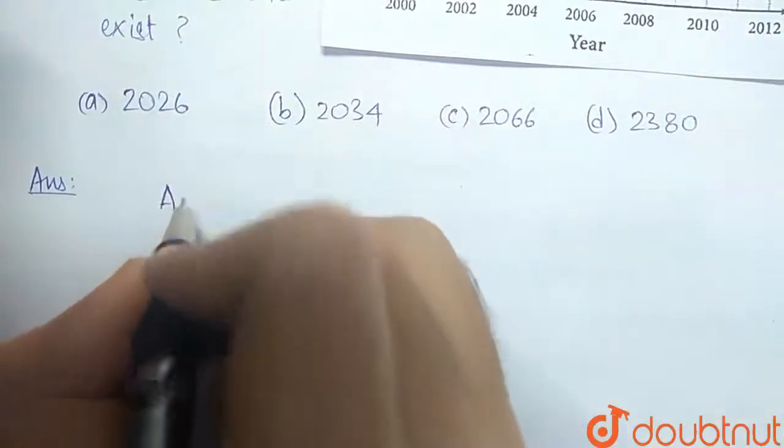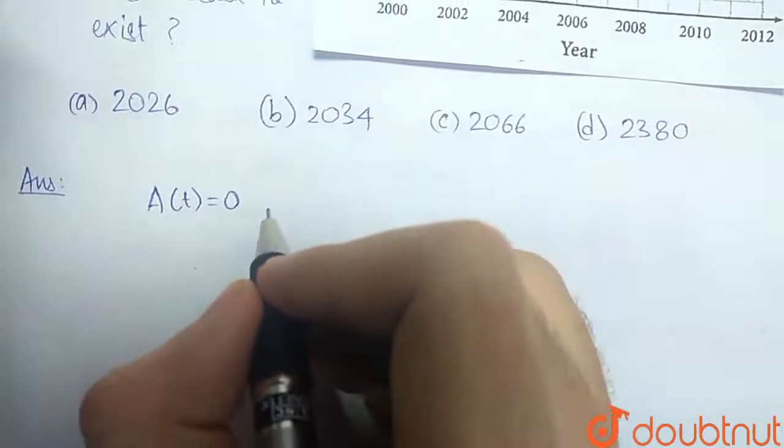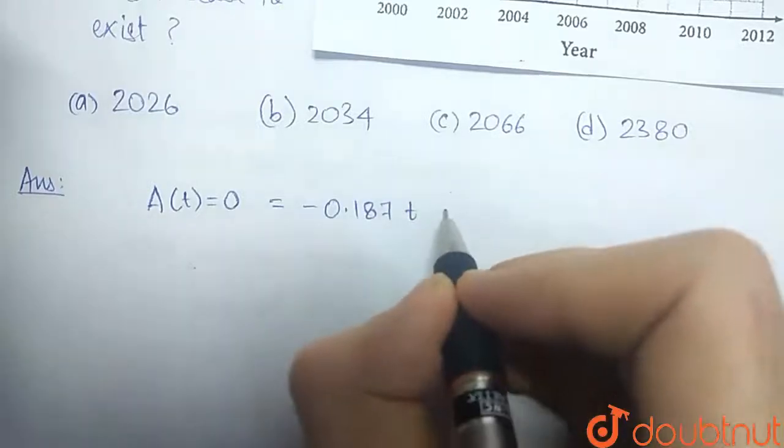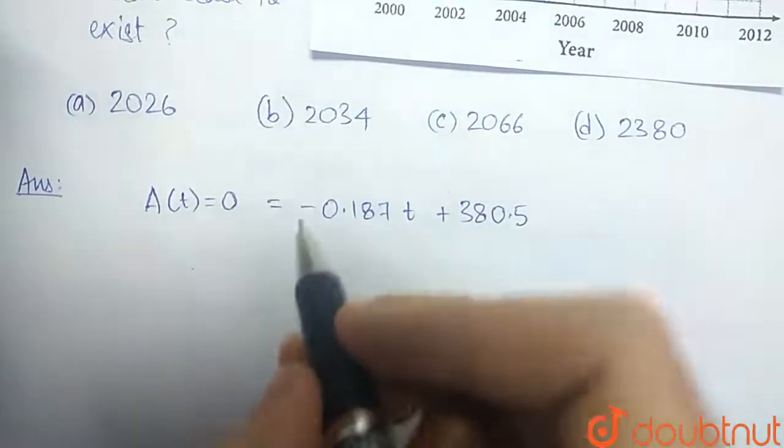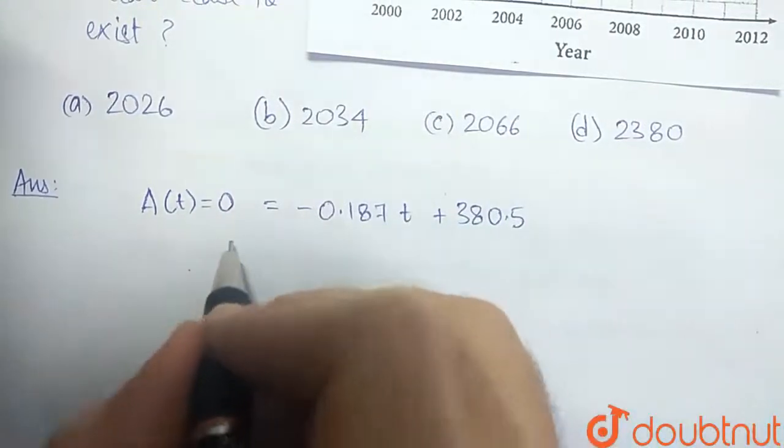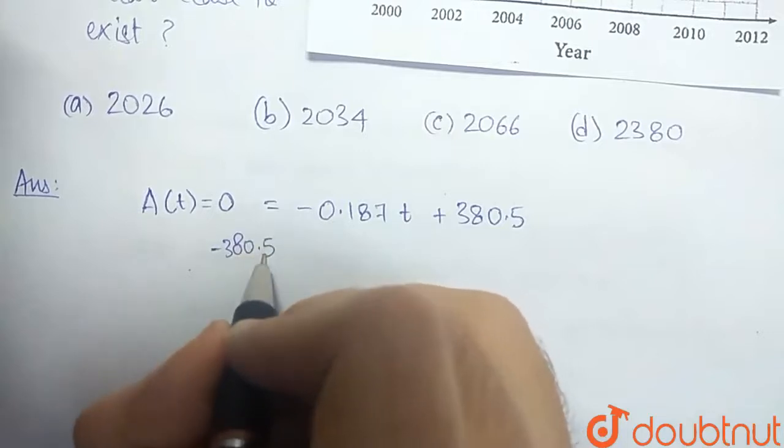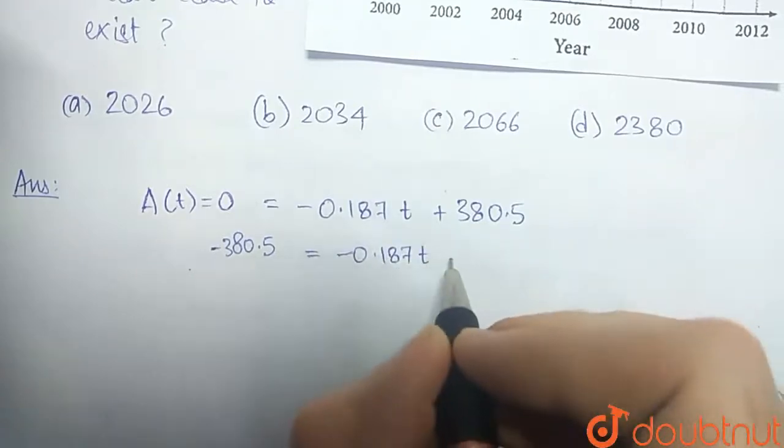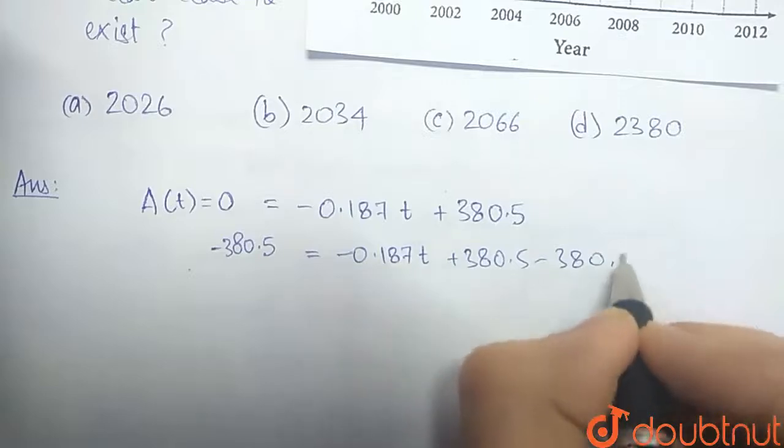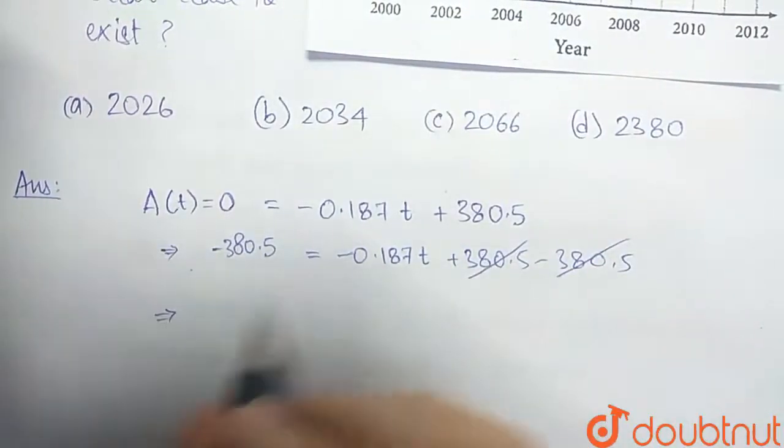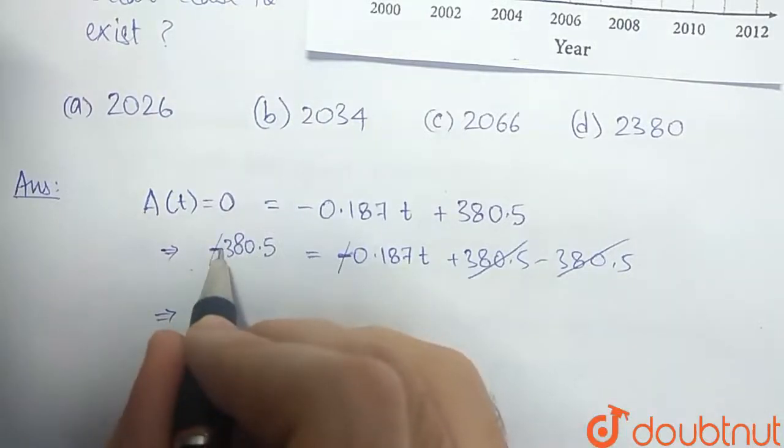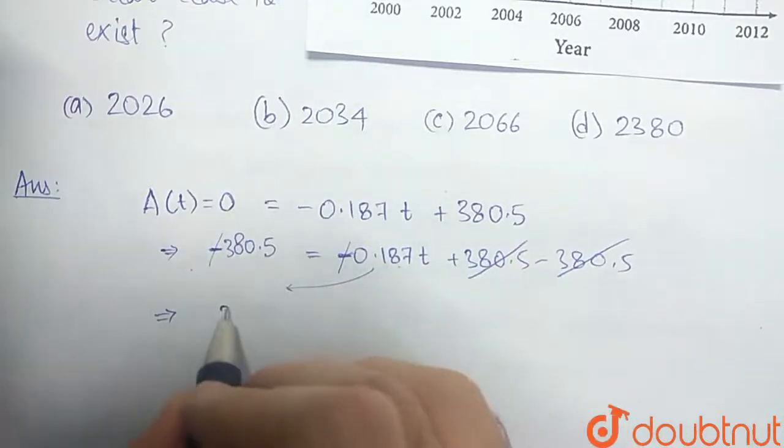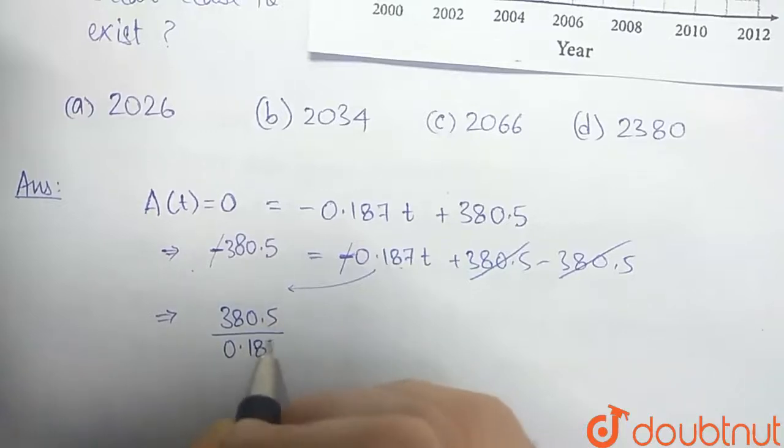So A(t) = 0 is what we require. According to the formula, A(t) = -0.187t + 380.5. Now subtracting 380.5 on both sides, we have -380.5 = -0.187t + 380.5 - 380.5. So we can cancel out the negative sign and bring this 0.187 to the left. So it becomes 380.5 divided by 0.187 equals t.